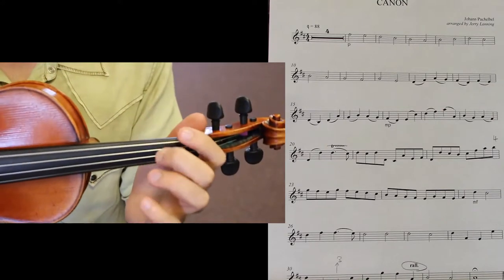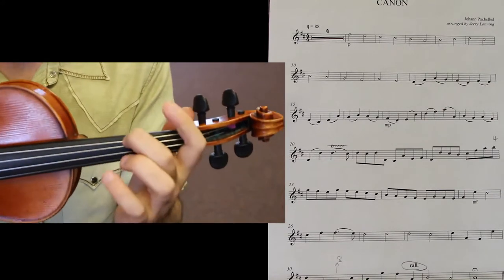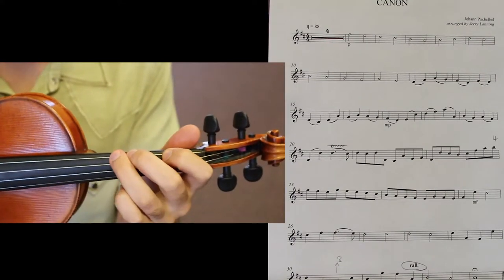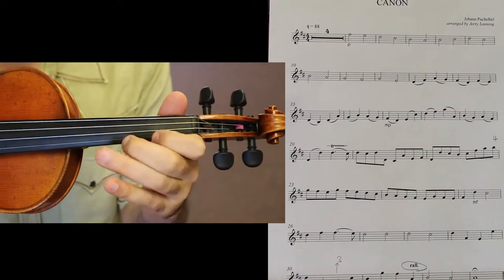So, go over learning the notes again. The ones specifically on G string. G, A, B, C. Below the second ledger line. On the second ledger line. Below the first. On the first. Here on E, E, F, G, A.